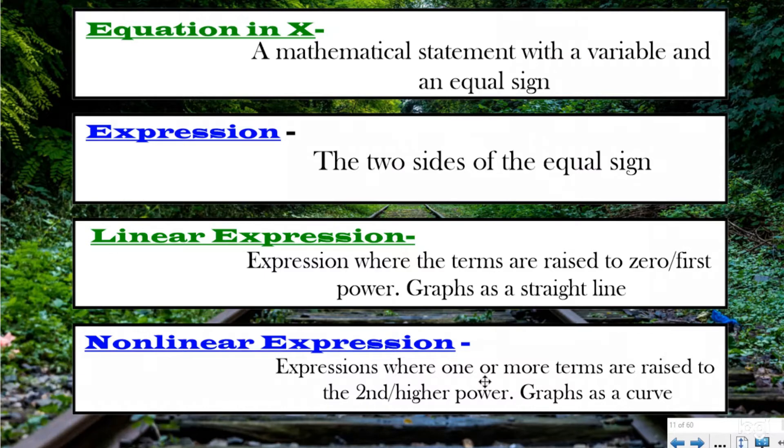For a nonlinear expression you're going to see terms with exponents, and for a linear expression you're not going to see any terms with exponents. That's really the difference we're focusing on today. When you take them to a coordinate plane, the linear expression graphs as a straight line—hence linear—and the nonlinear is non-straight or not a straight line.